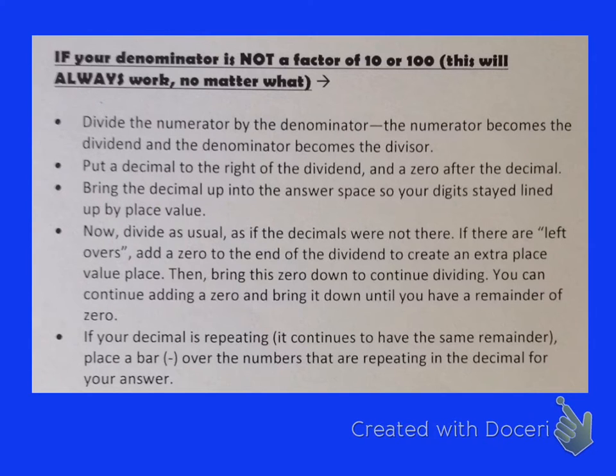Now this is the other way to convert a fraction to a decimal, and this will always work no matter what numbers are in your fraction. So this is my favorite way to work because it always works out. The first thing you do is divide the numerator by the denominator. The numerator becomes the dividend, and the denominator becomes the divisor. We put a decimal to the right of the dividend, and a zero after the decimal. We bring up the decimal into the answer space so the digits stay lined up by place value. And then we divide as usual, as if the decimals are not there.